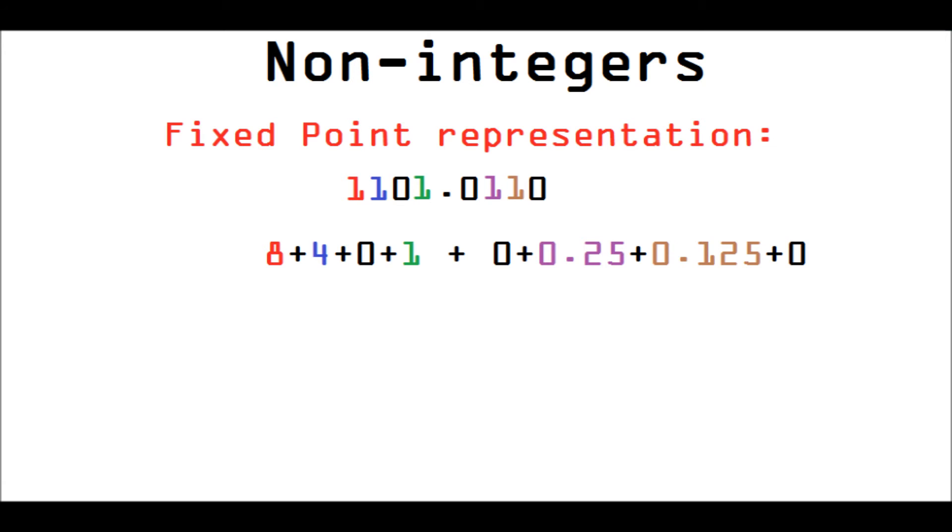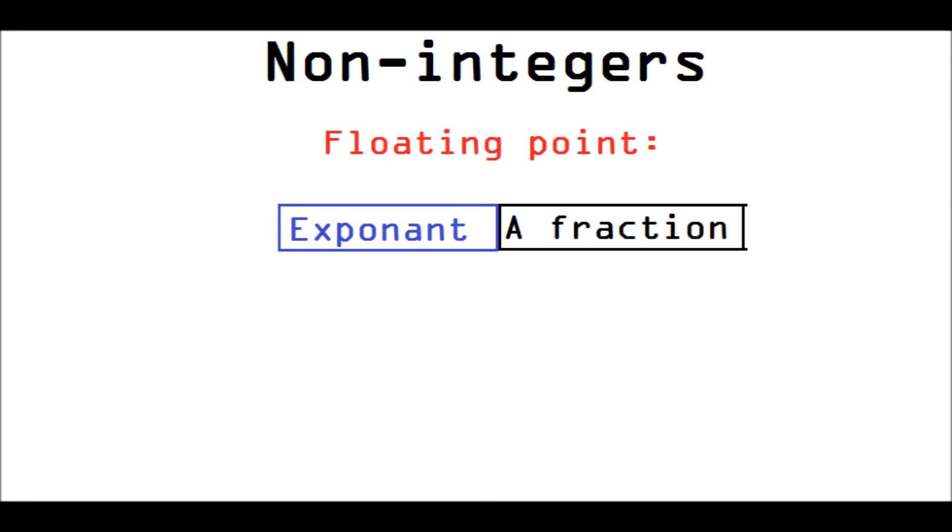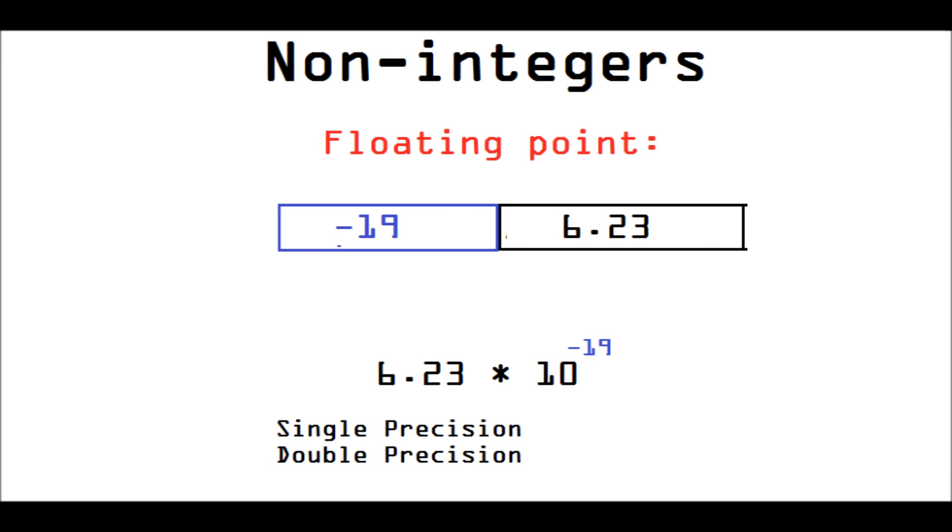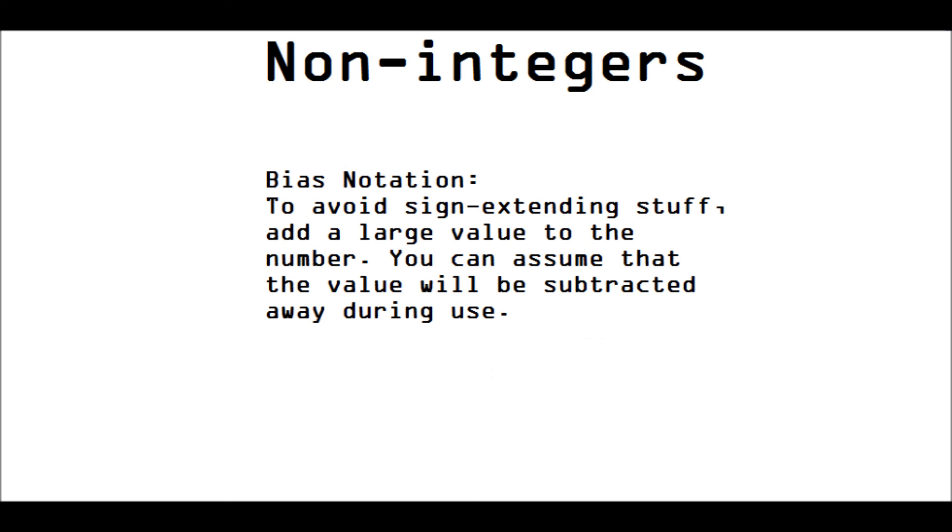For really big and really small numbers, we have floating-point representation, which is basically scientific notation. And it's a two-part representation. One part is an exponent, and one part is a fraction. So, here we see an example. Negative 19 for the exponent and 6.23 for the fraction. And this is how it works. 6.23 times 10 to the negative 19. That's what this representation is. There are two flavors to this. There's single precision and double precision. Double precision simply has more numbers in the fraction.